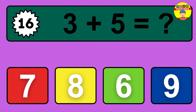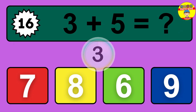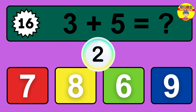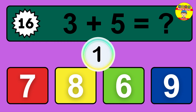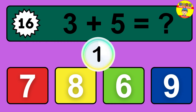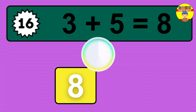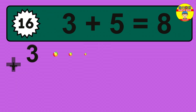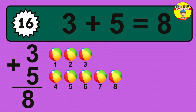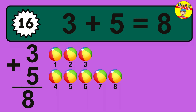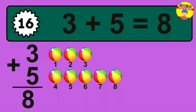Question 16. 3 plus 5 equals what? So the answer is 3 plus 5 is 8. Let's count it.